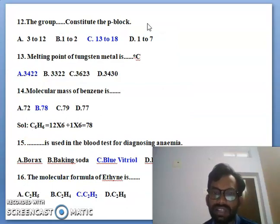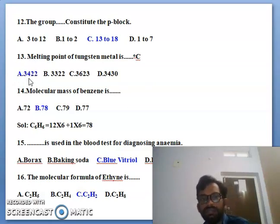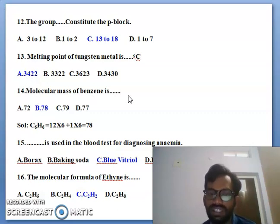Next tannic acid, twelfth one bit: the group constituent the p-block elements. So p-block elements, the groups are 13 to 18. 13 to 18 is the p-block elements. Next one, melting point of tungsten metal is 3422 degrees. So right answer is 3422 is the right answer for the melting point of tungsten in degree Celsius.